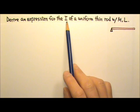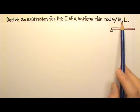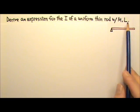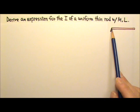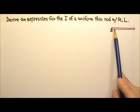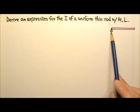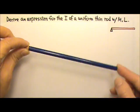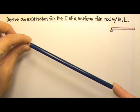Derive an expression for the rotational inertia or moment of inertia of a uniform thin rod with mass M and length L, about an axis that is perpendicular to the rod and goes through the end of the rod, meaning the rod rotates like this about its end.